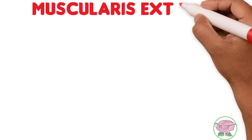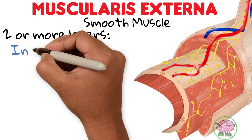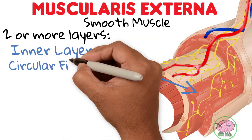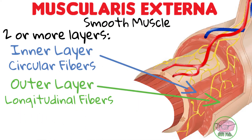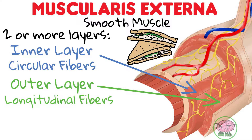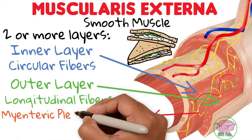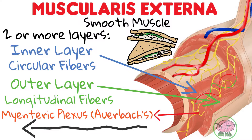The muscularis externa is made up of smooth muscle organized in two or more layers. The internal layer, closest to the lumen, has circular fibers, while the external layer has longitudinal fibers. Between these two layers, like a sandwich, we find connective tissue holding blood vessels, lymphatic vessels, as well as the myenteric plexus, also known as Auerbach's plexus, which controls the peristalsis of the gastrointestinal tract.